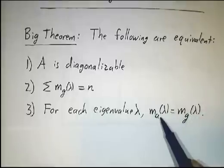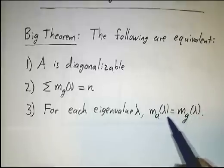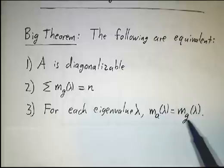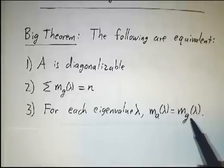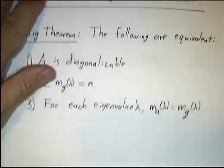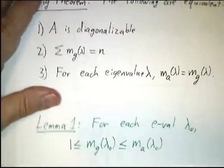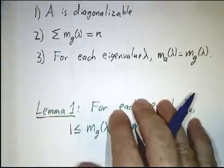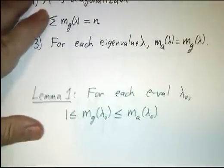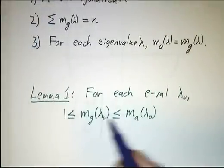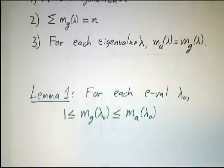The algebraic multiplicity says what kind of root an eigenvalue is of the characteristic polynomial — single root, double root, triple root. The geometric multiplicity is the dimension of the eigenspace. We had a result leading up to that: the geometric multiplicity is always at least one if you've got an eigenvalue, but it's never bigger than the algebraic multiplicity.